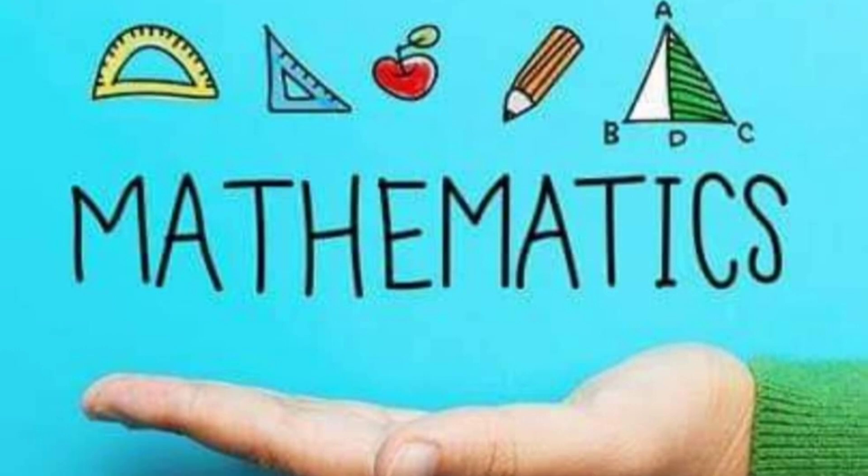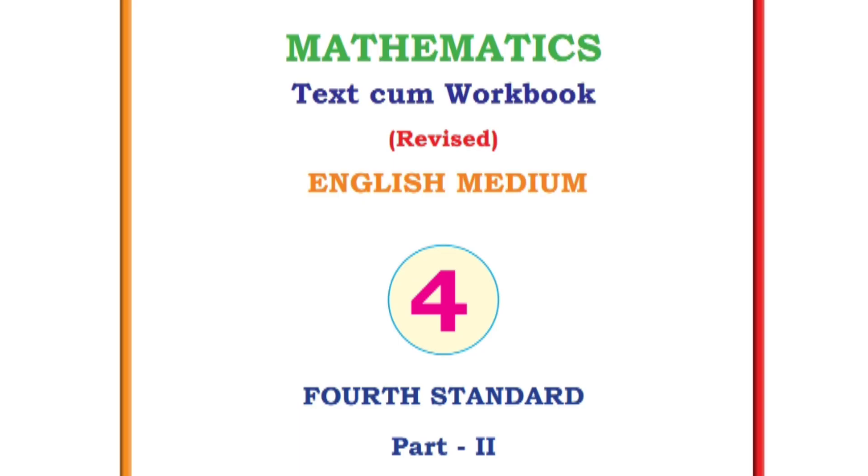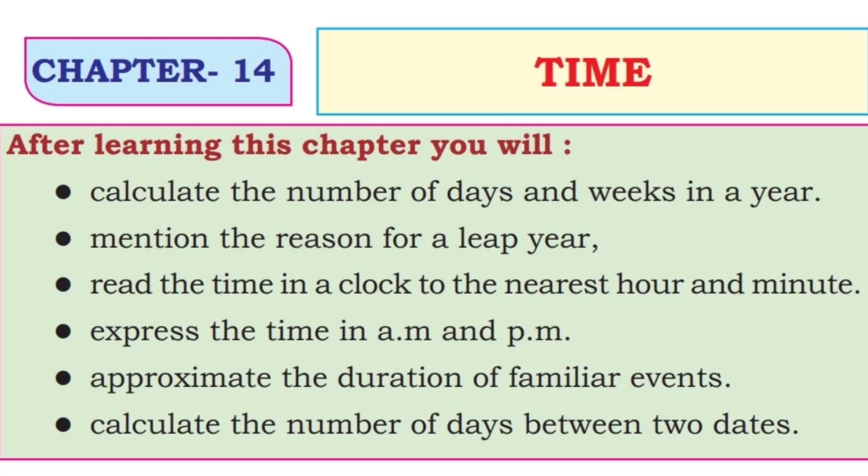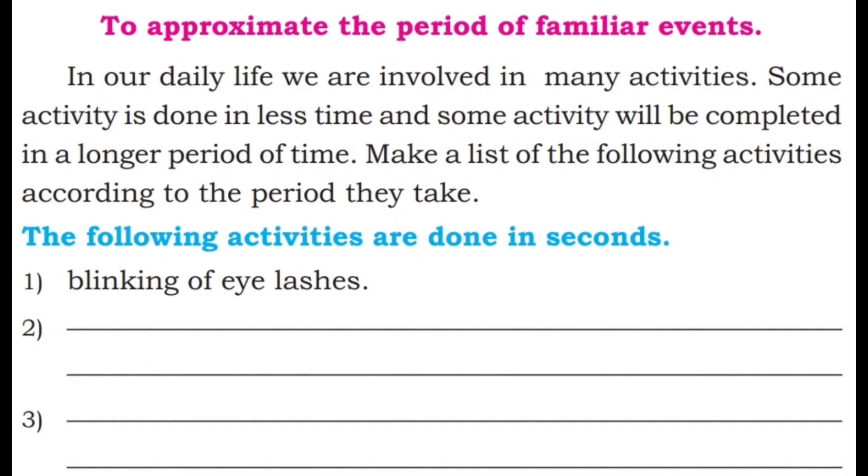Hello everyone, welcome to math class fourth standard part 2. Let's continue with the lesson time. Today we will learn about to approximate the period of familiar events. In our daily life we are involved in many activities. Some activities is done in less time and some activity will be completed in a longer period of time. Make a list of the following activities according to the period they take.